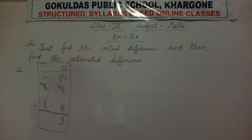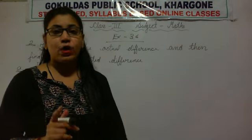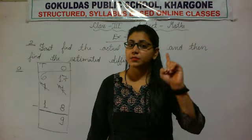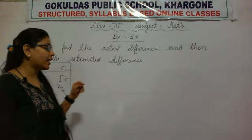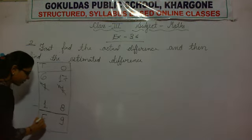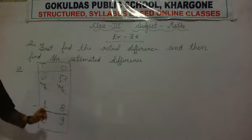Moving towards tens: 6 minus 1. Remember the subtraction property — whenever 1 is subtracted from any number, the result is the previous number. So what is the previous number of 6? It is 5. So our actual difference is 59.